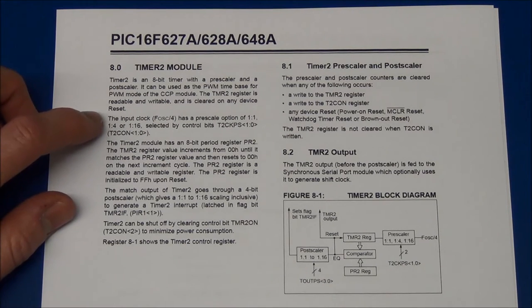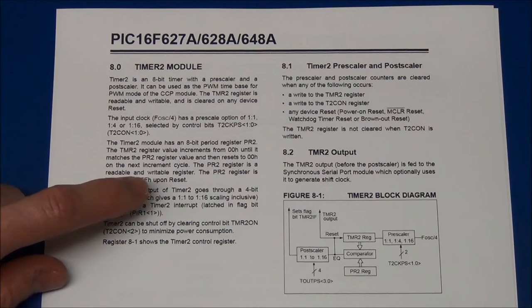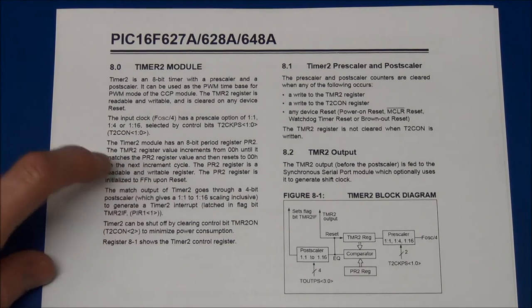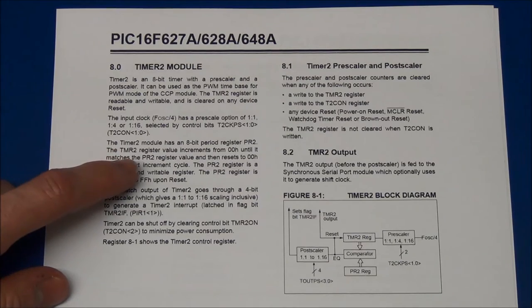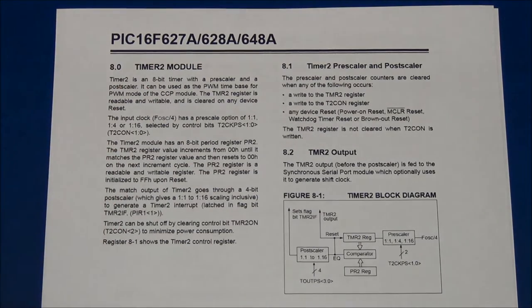As said, the pre-scaler can divide it by a factor of 4 or a factor of 16, and after that we have the post-scaler that can be any value between 1 and 16, and we have the PR2 register where we can set the timer to overflow at any number we want between 0 and 255.